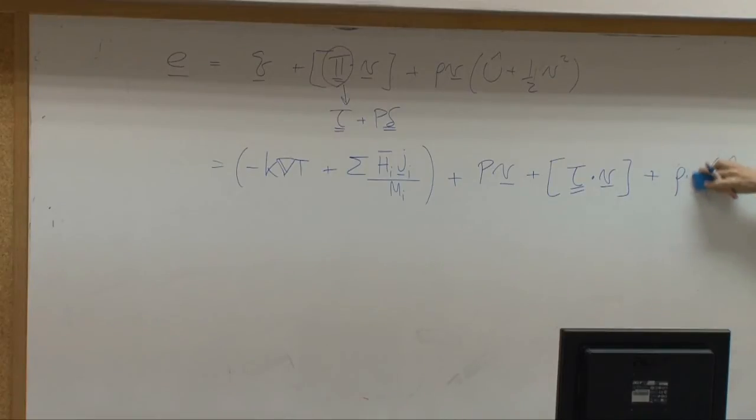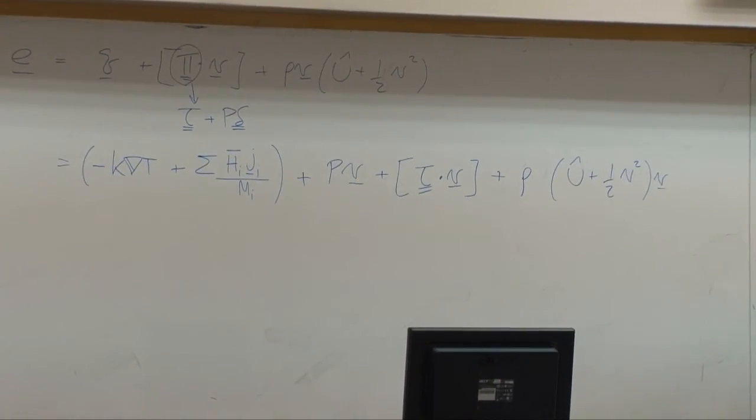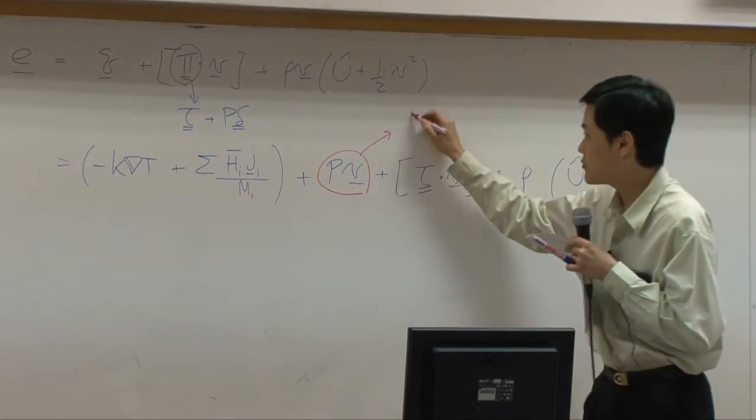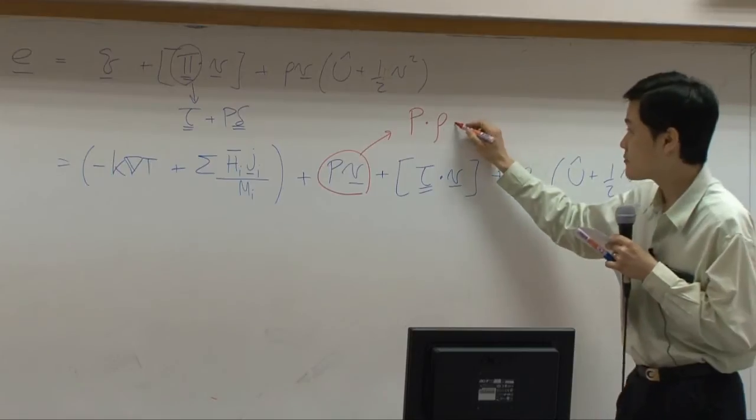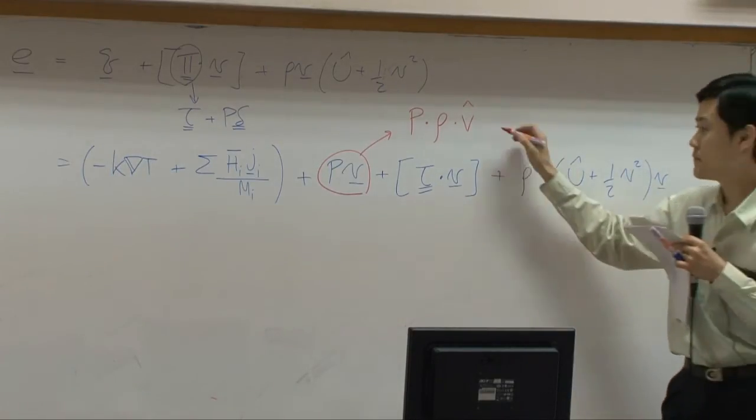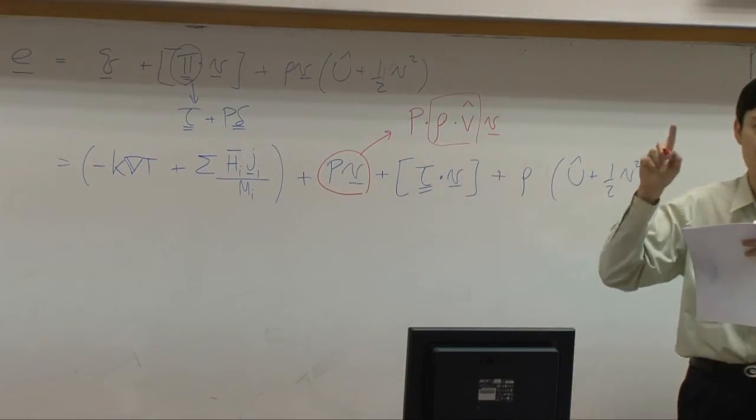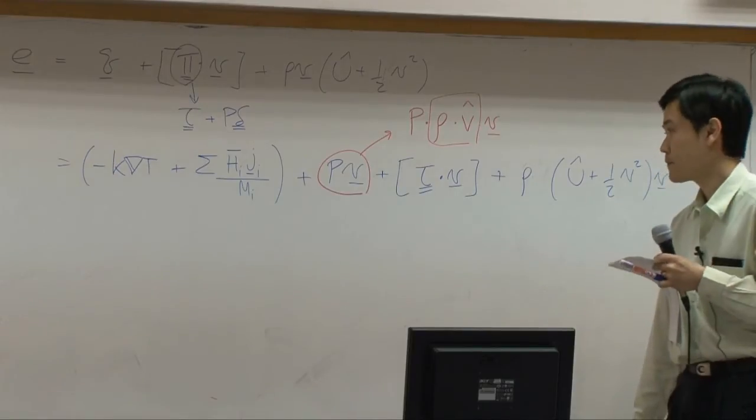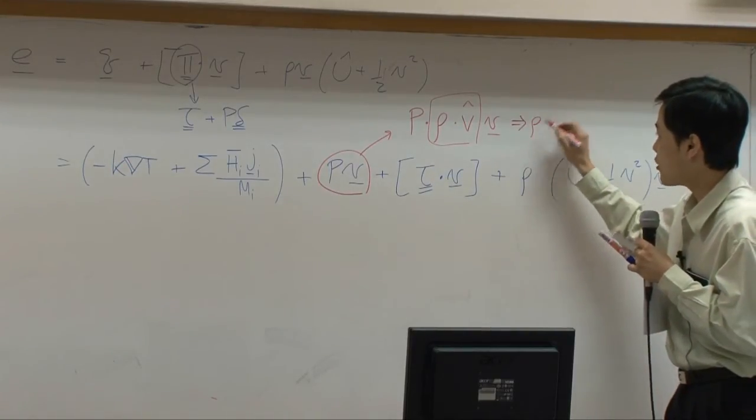All right, from here if I take it back here I can do that because it's just multiplication. Now this term I'm going to say that it is pressure times density times specific volume. Density is one over specific volume, this combined would give you one. So I'm going to expand it.